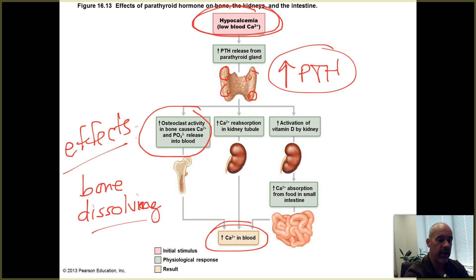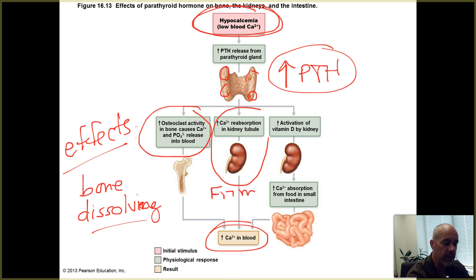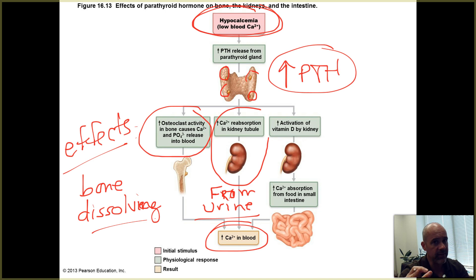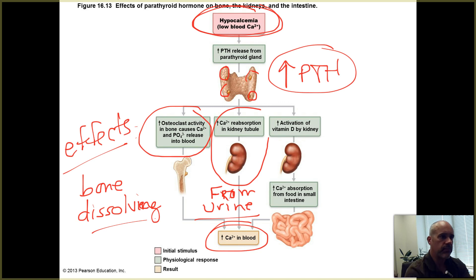Another effect of PTH is that it tells your kidneys to reabsorb more calcium from the urine. When we study the kidneys later in the semester, you'll see that early urine being produced can have substances reabsorbed back out of it before it reaches the bladder. We've already talked about how ADH triggers water reabsorption from urine. Similarly, PTH tells the kidneys to reabsorb calcium from the forming urine and return it to the bloodstream and body fluids.